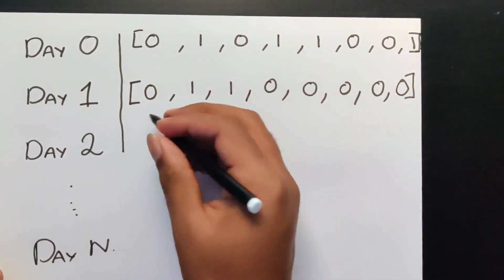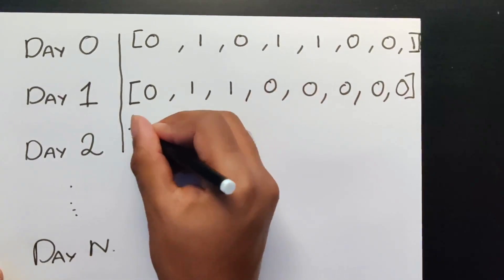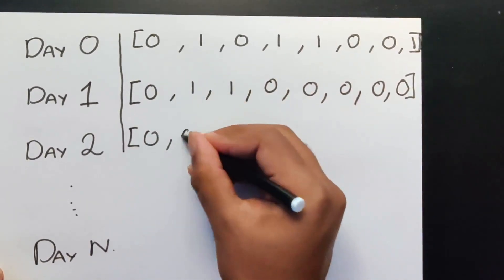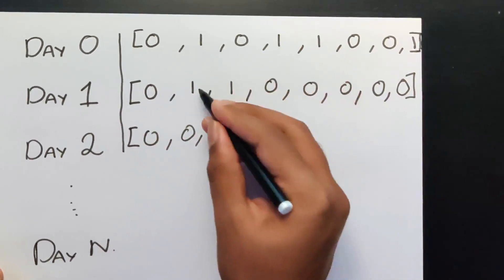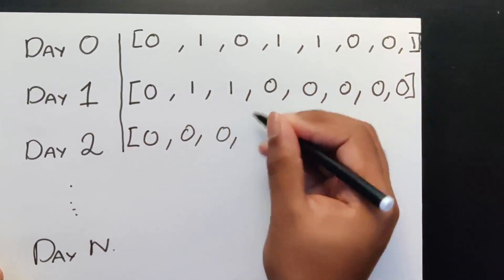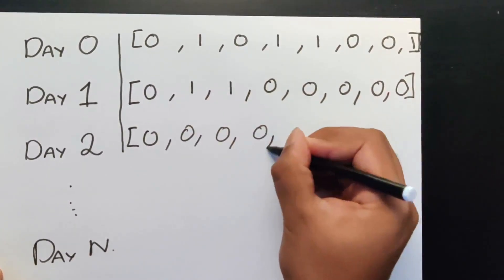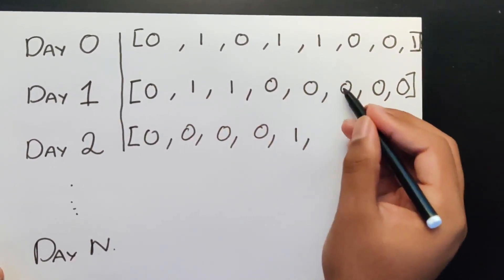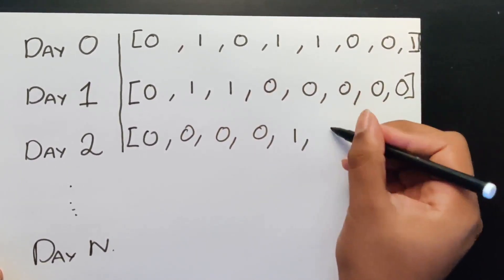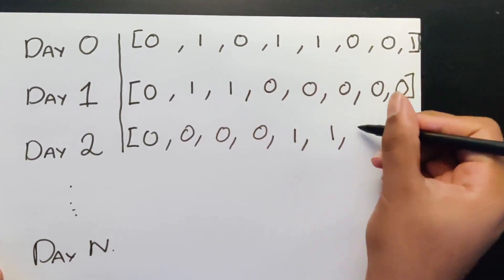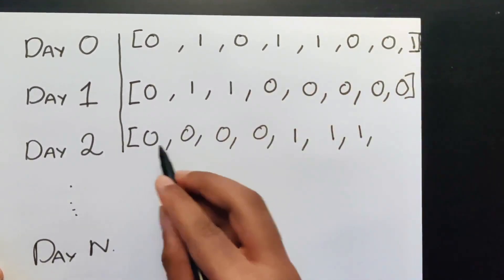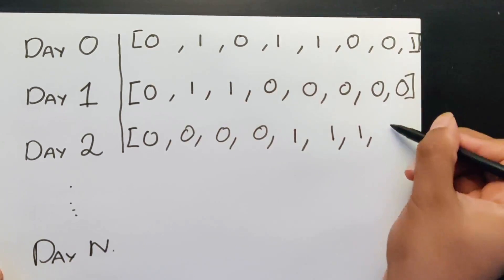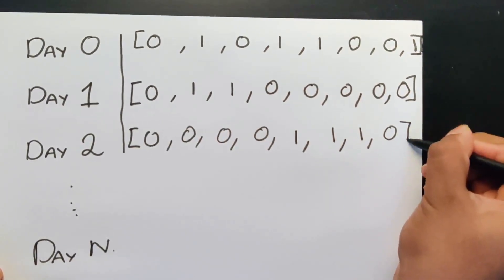I'll show you how the second day is going to look like. So the first one's going to be zero, then zero — they're not the same, so zero again. These two are the same, so it becomes a one. Then we get a one again, one more one. The last one is going to be zero. So this trend is going to follow on all the way up to day N.